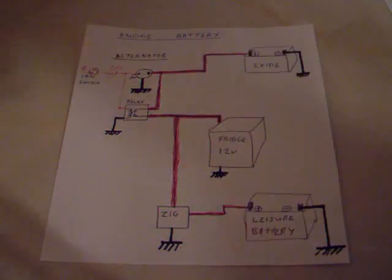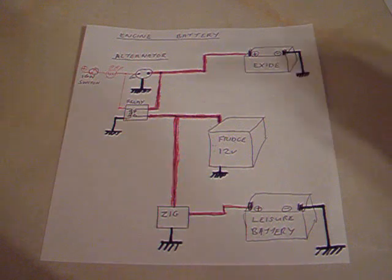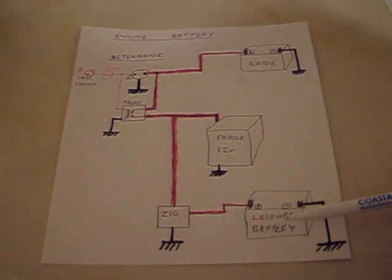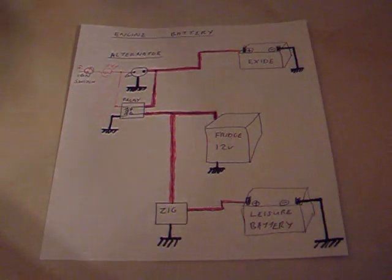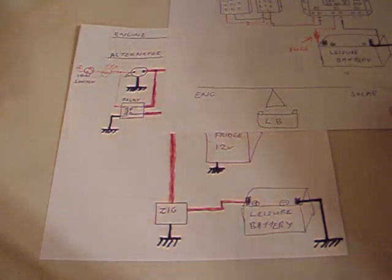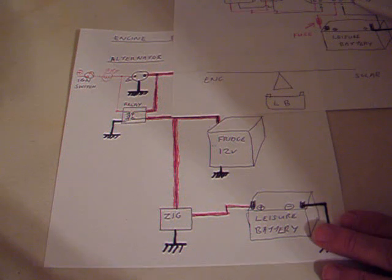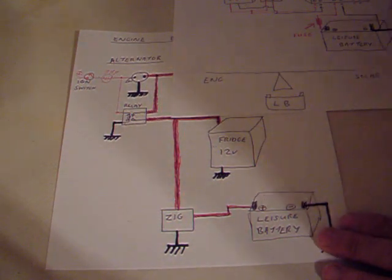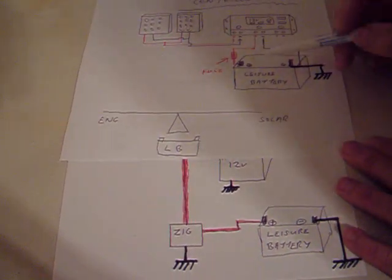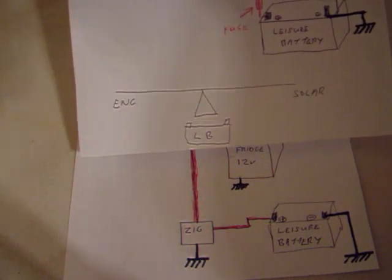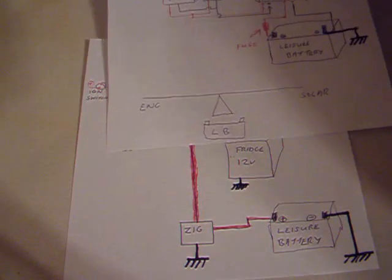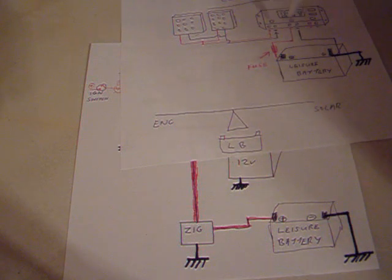Now going back to the original drawing I did with the alternator, the fridge, the engine battery and the leisure battery. How on earth do you connect the solar panel or solar controller to the leisure battery? Well very simply, you just put the output from the programmable controller, the positive to the battery via a fuse as you would onto the battery exactly as you would if this wasn't here. So you put the positive of the solar controller to the positive of the leisure battery via a fuse and the negative to there.